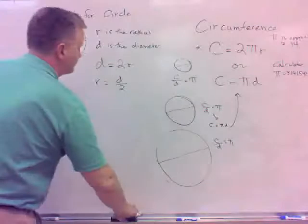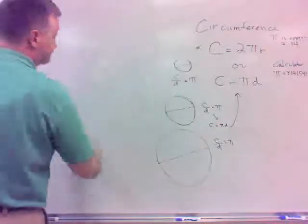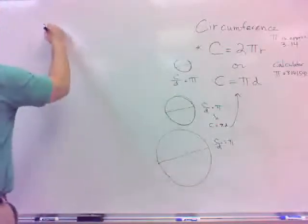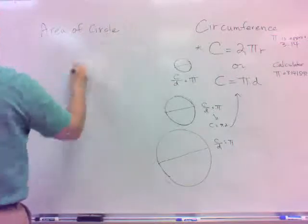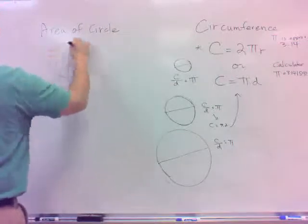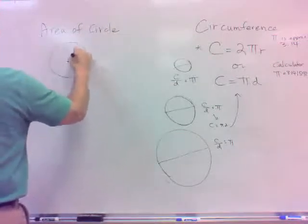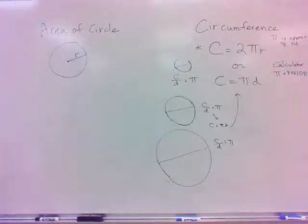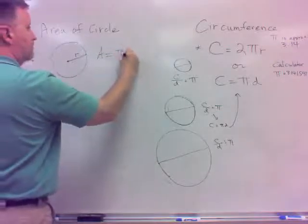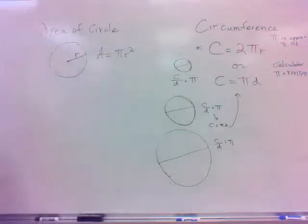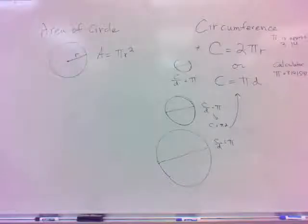Now, the area of a circle, it is usually listed in terms of the radius. What's the area of a circle? What's the area of a circle? Pi r square. Pi r square. Yeah. Area of a circle is always pi times the radius squared.